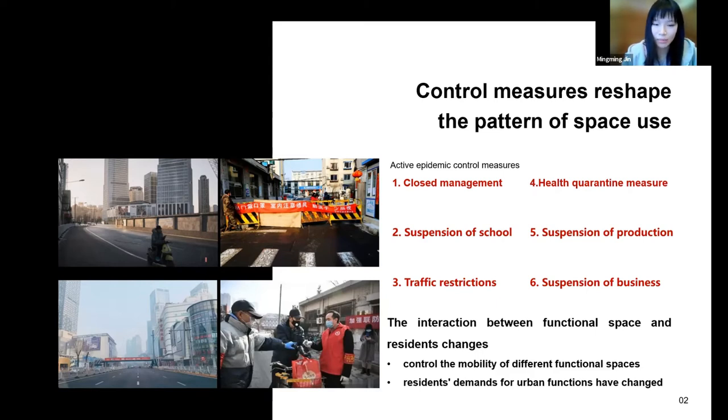For one thing, these epidemic control measures control the mobility of different function spaces. For another thing, residents' demand for urban functions have changed during the epidemic. The combined effect of the two leads to the change in the interaction between function space and residents.